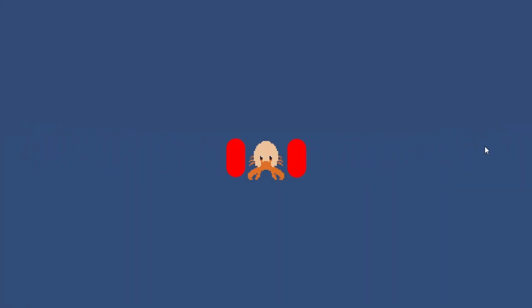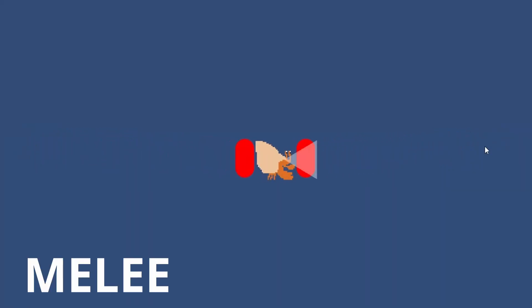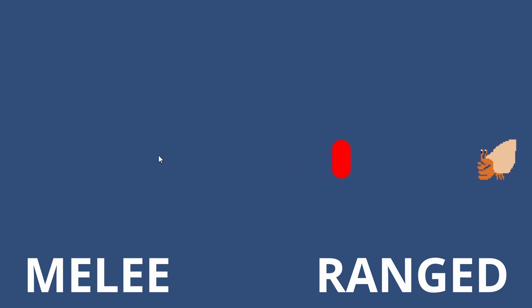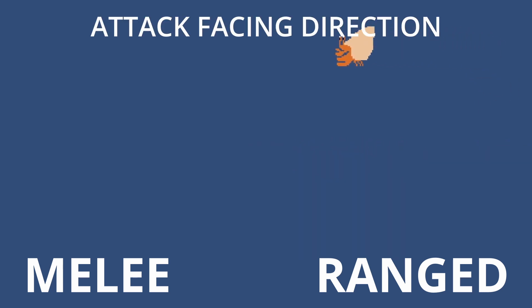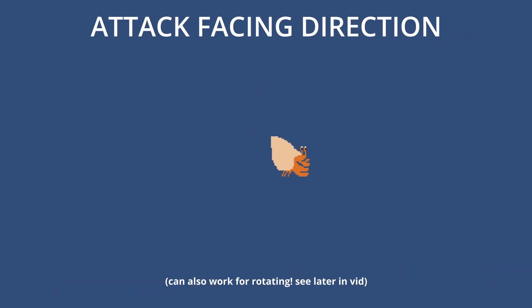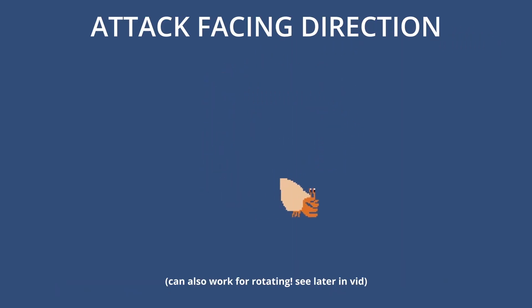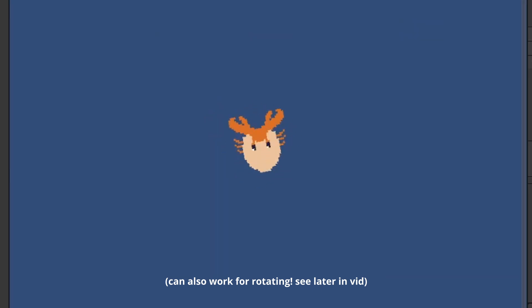By the end of this video we're going to be able to defeat our enemies by either melee attacking or with a ranged attack. Our aim will be based on our player's direction, so this will work on a top-down game where your sprite rotates and not your game object.